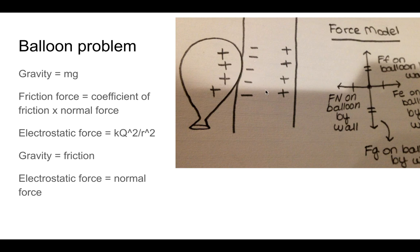When you draw a free body diagram, the electrostatic force is going to push into the wall because it's attracted to the wall. Normal force is going to be against the wall because it pushes against the wall. Force of gravity pulls down and friction pulls up.